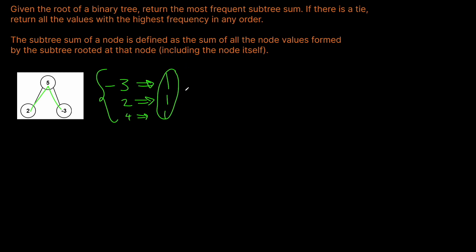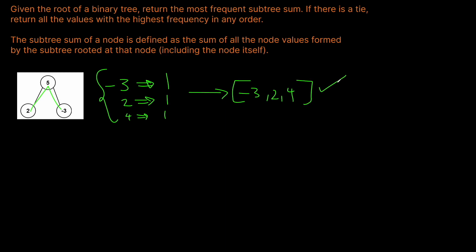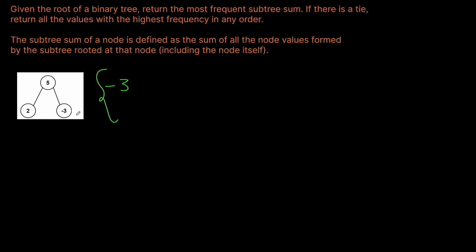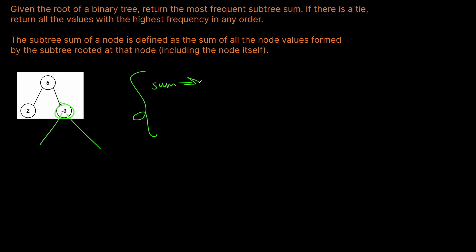In this case, all of these have the same count, and that's the maximum frequency, which is one. So we want to return all of them as our solution. Essentially, for every single node in the tree, we get the sum of its entire left and right subtree, add it to the current node's value, and then add it to a dictionary which maps the sum to the frequency of that sum.